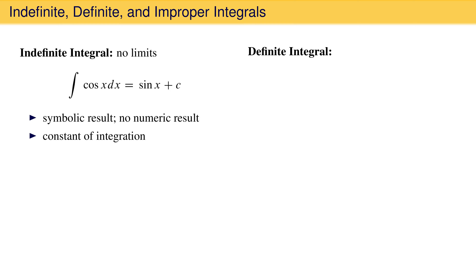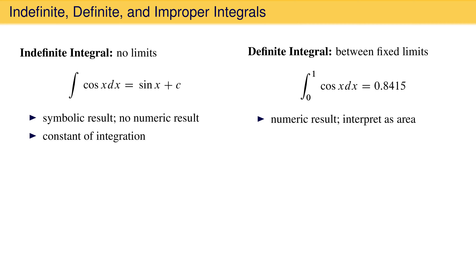A definite integral is evaluated between two fixed points. An example is the integral from 0 to 1 of cosine dx, which is equal to 0.8415. The result is numeric and can be interpreted as the net area between the function and the x-axis from 0 to 1. There is also no constant of integration.